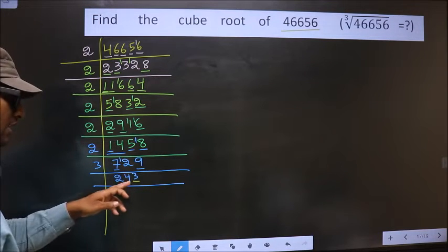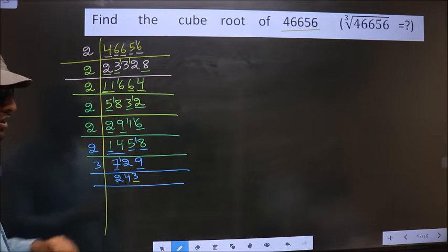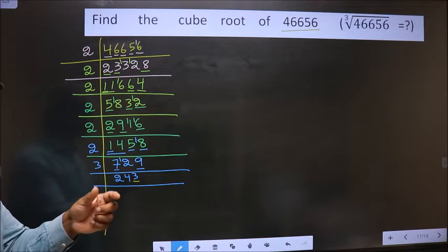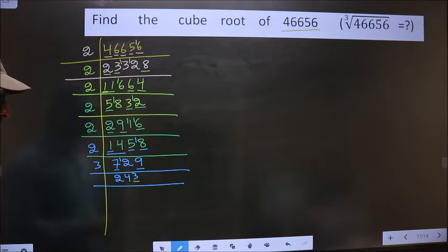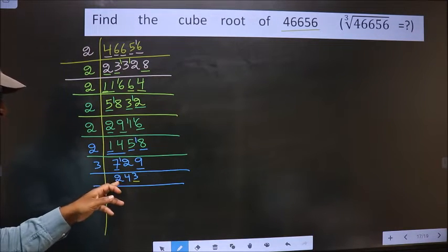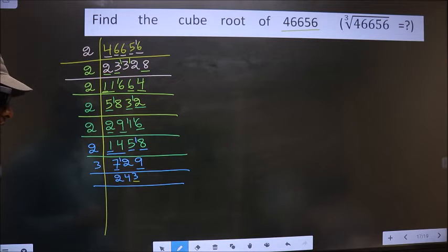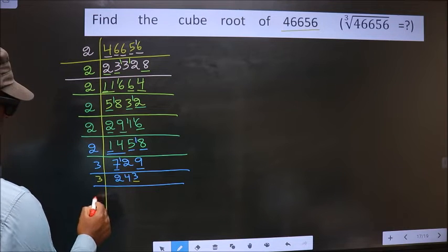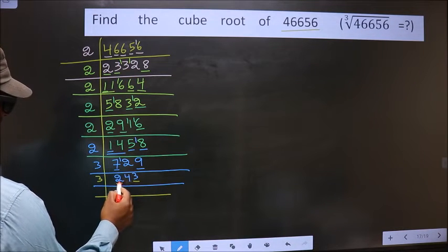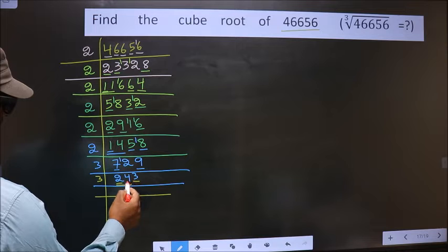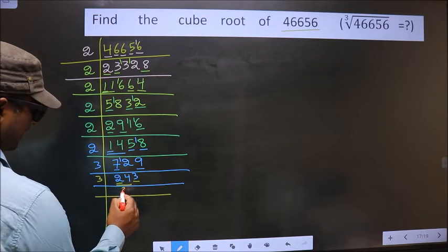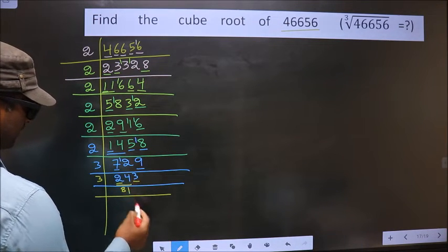For the next number, last digit is 3, not even, so not divisible by 2. Adding the digits: 2 plus 4 plus 3 is 9, which is divisible by 3, so this number is also divisible by 3. First digit is 2, smaller than 3, so we take 2 digits: 24. 3×8 is 24. Next digit is 3 — 3×1 is 3.